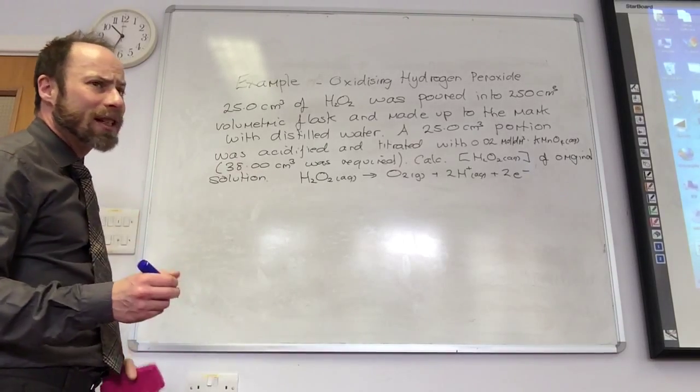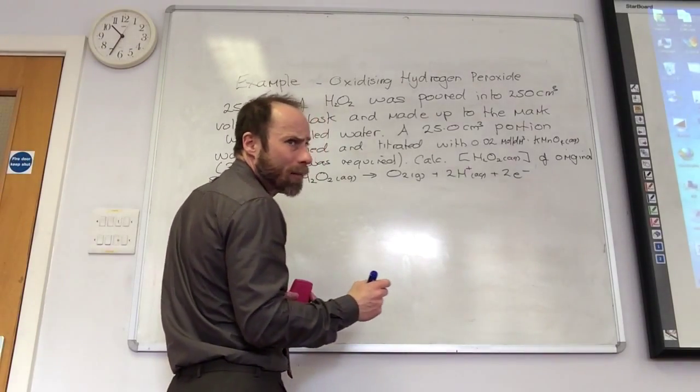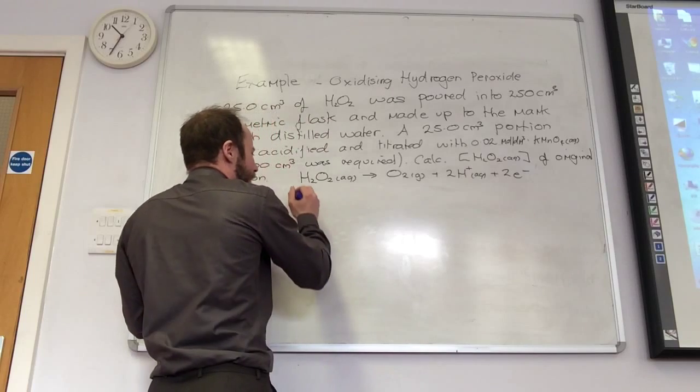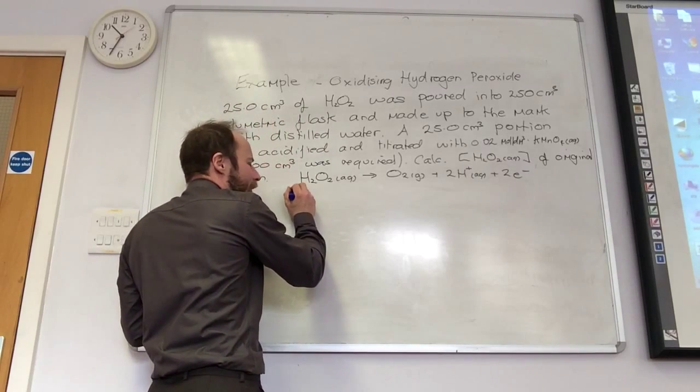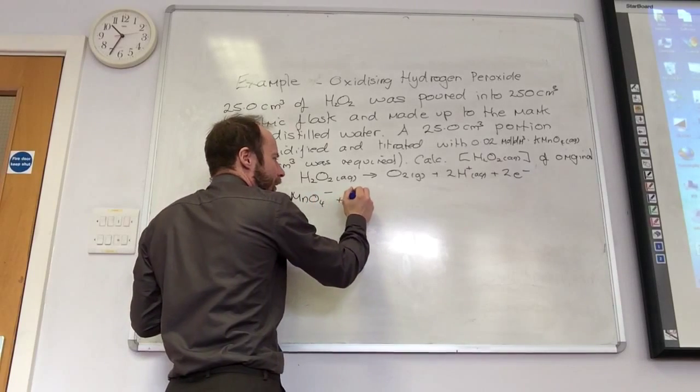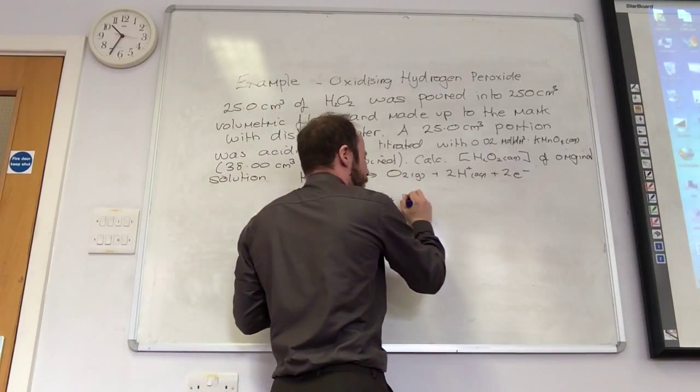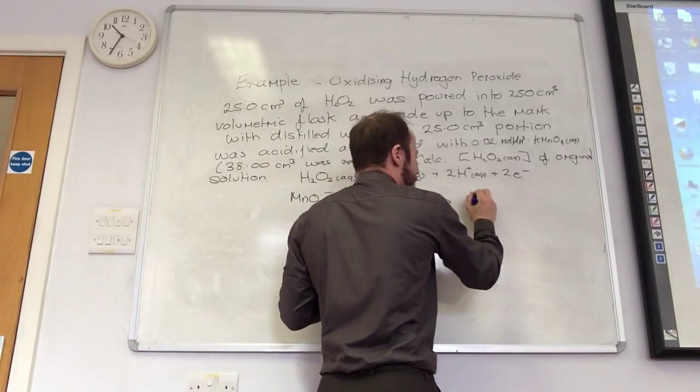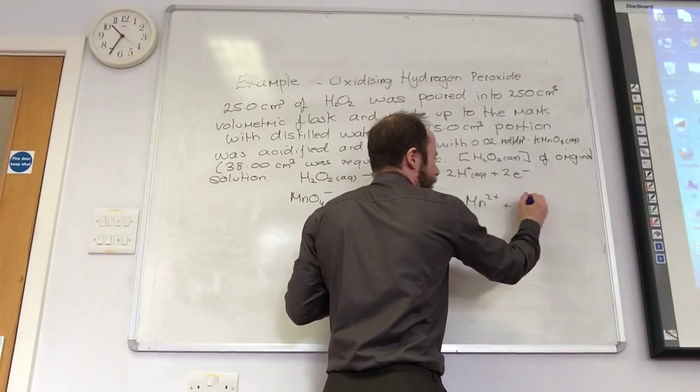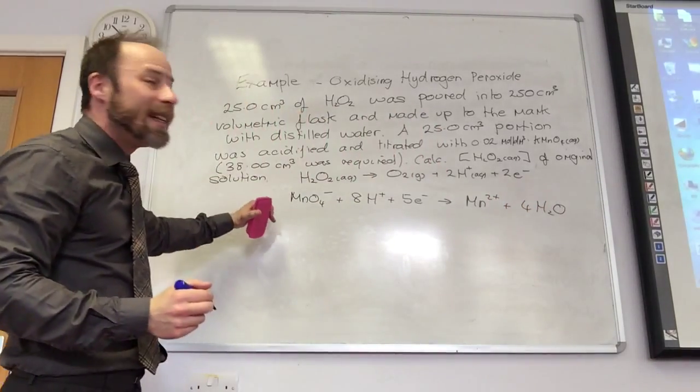So the first thing, you need to know the half equation for potassium permanganate or the manganate one. So for manganate, it was MnO4 minus plus 8H+ plus 5 electrons goes to Mn2+ plus 4H2O. You need to know that.